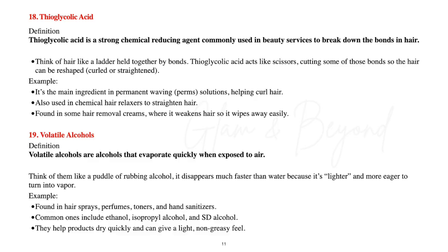Number eighteen: thioglycolic acid. Thioglycolic acid is a strong chemical reducing agent commonly used in beauty services to break down the bonds in hair. Think of hair like a ladder held together by bonds — thioglycolic acid acts like scissors, cutting some of those bonds so hair can be reshaped, whether curled or straightened. It's the main ingredient in permanent waving (perm solutions), also used in chemical hair relaxers to straighten hair, and found in some hair removal creams where it weakens hair so it can be wiped away easily.